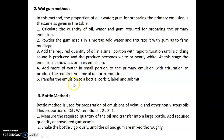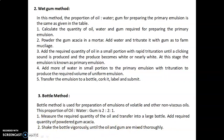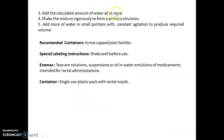Add more water in small portions to the primary emulsion with trituration to produce the required volume of uniform emulsion. Transfer the emulsion to a bottle, cork it, label it, and submit. The bottle method is used for volatile and other non-viscous oils, with a ratio of 2:2:1 (oil:water:gum). Measure the required oil into a large bottle, add powdered gum acacia, shake vigorously until mixed, add the calculated water all at once, shake to form a primary emulsion, then add more water in small portions. The recommended container is a screw-capped plain bottle; the special labeling instruction is 'Shake well before use.'